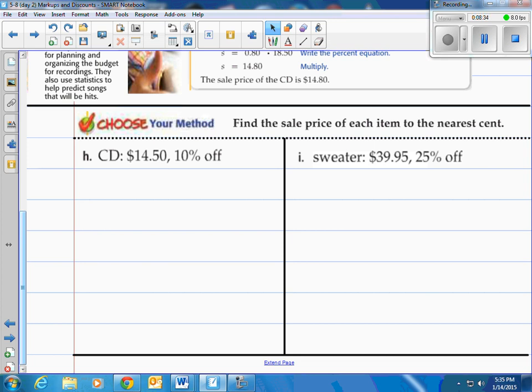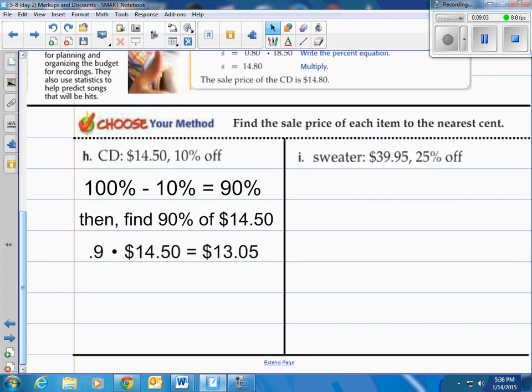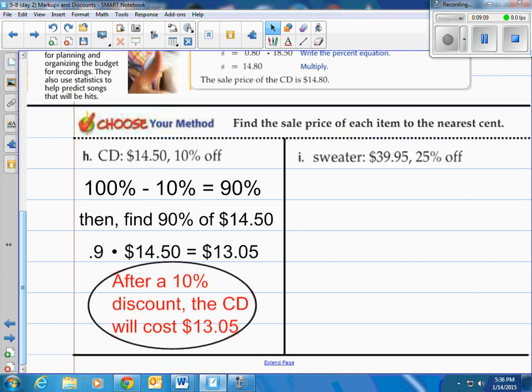We have a CD here for $14.50 and they say take a 10% off discount. That means find the sale price of each item to the nearest cent after the discount. Well when we take the 10% off of the $14.50 notice 10% when we take 10% off that means we are paying 90%. We don't have to pay the extra 10% they're saying take that off. So let's find 90% of $14.50. When we take 90% of $14.50 that means 0.9 times $14.50 that's $13.05. There you are. After a 10% discount the CD will cost $13.05 which is actually 90% of the wholesale price there.